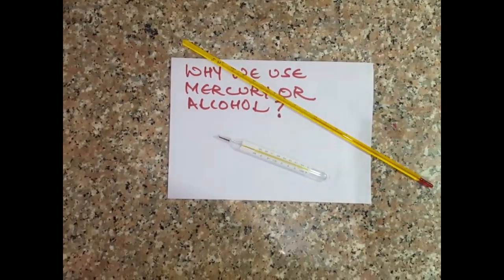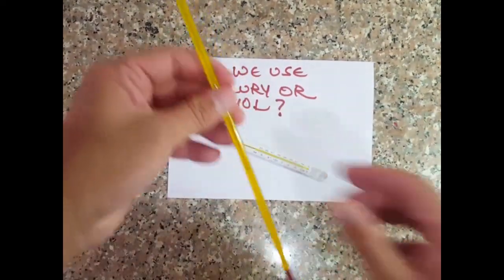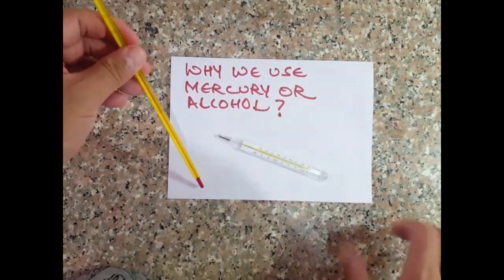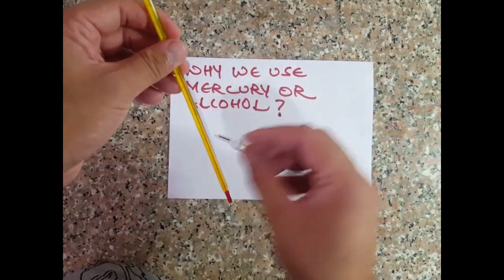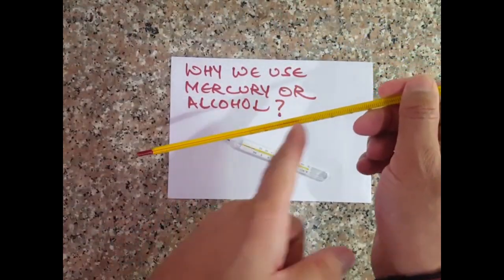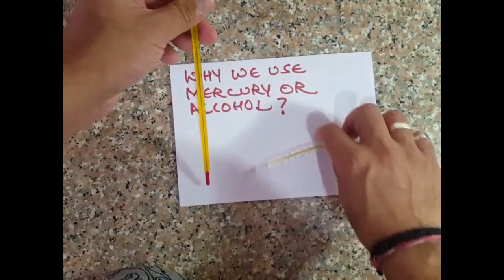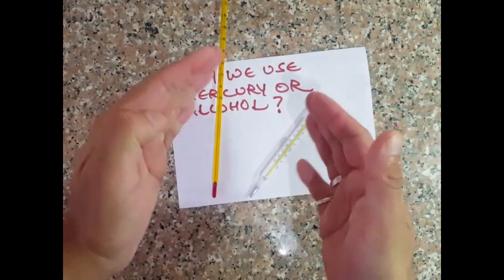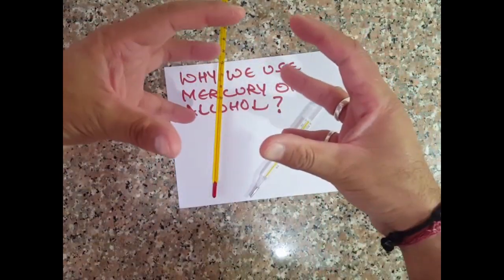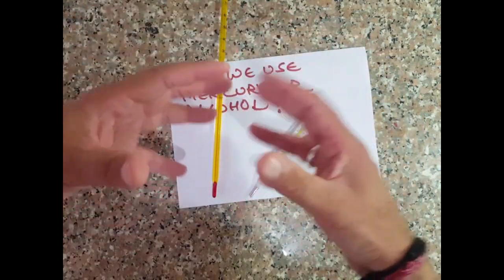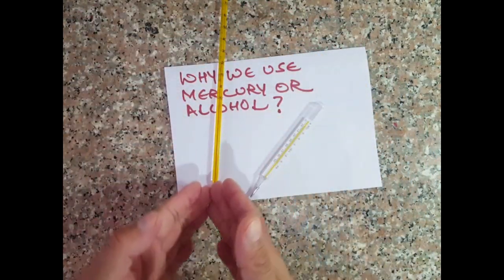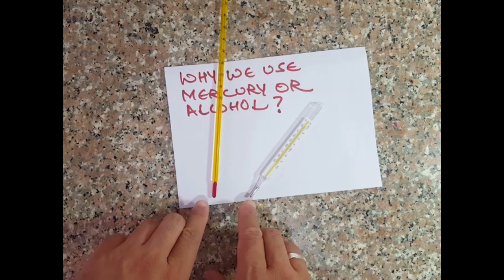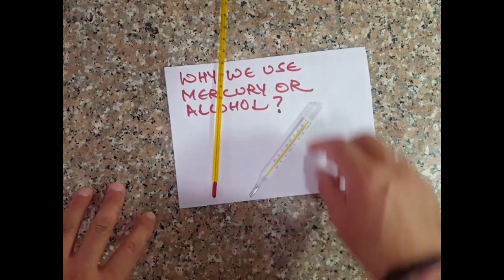But why do we use alcohol or mercury? The reason is that alcohol and mercury expand very rapidly. When they receive a little bit of heat, they expand so rapidly that the alcohol then rapidly rises in the capillary tube. Also, when they lose heat they contract very rapidly. When I say contract, it means their atoms and molecules come closer to each other. Because of this particular property of alcohol and mercury they are used in thermometers so that we can rapidly read the changes that happen in temperature.